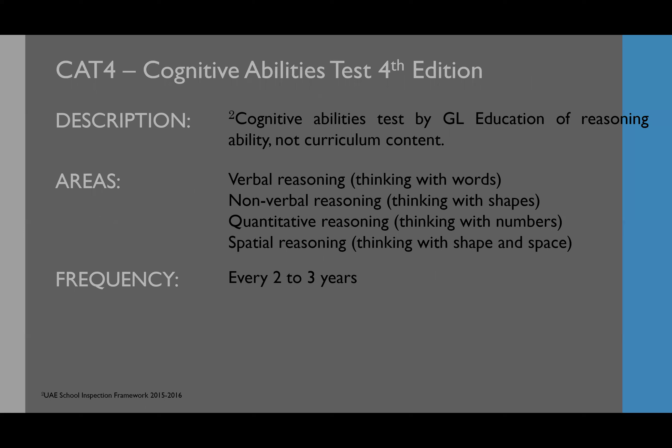CAT4 is the Cognitive Abilities Test, provided by GL Education, assessing reasoning ability — not curriculum content. It has four areas: verbal reasoning (thinking with words), nonverbal reasoning (thinking with shapes), quantitative reasoning (thinking with numbers), and spatial reasoning (thinking with shapes and space). Frequency is usually once every two to three years. When talking about CAT4, we have to keep in mind three very important notations.